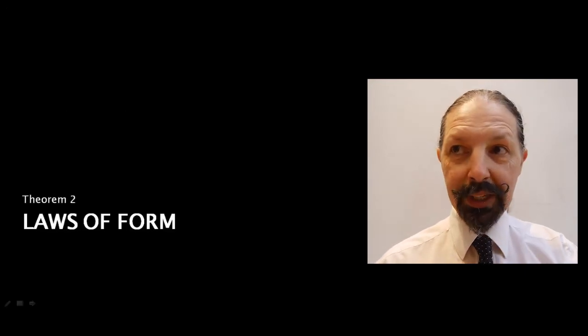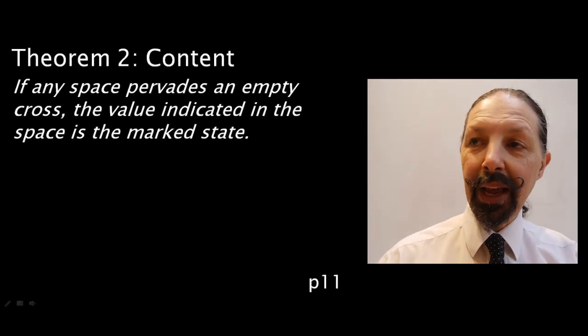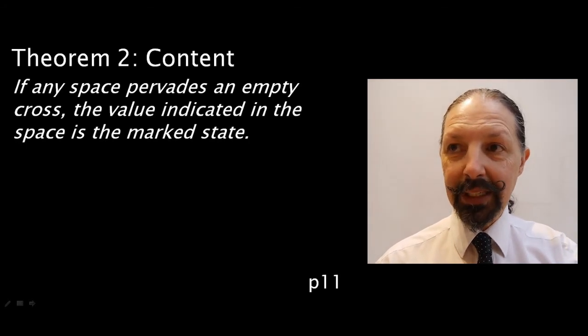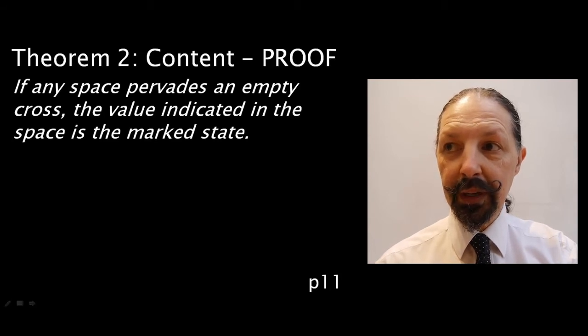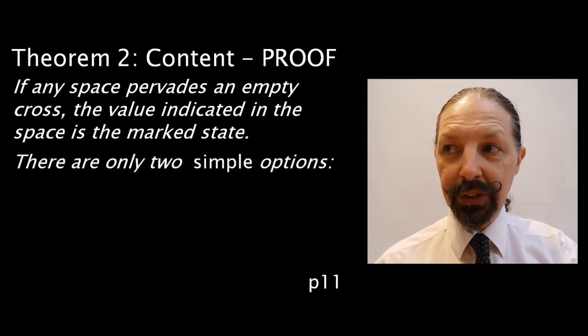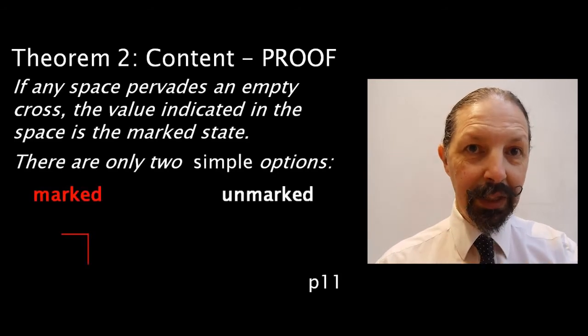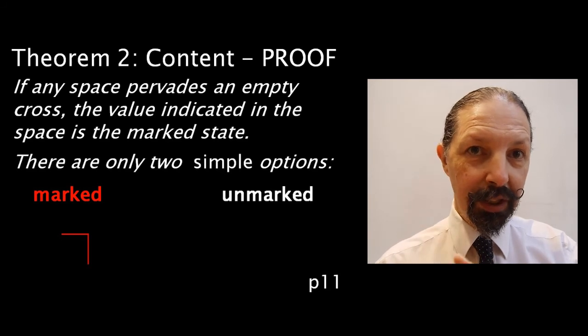Theorem 2 is all about content. And it states that if any space pervades an empty cross, the value indicated in the space is the marked state. The proof is very simple. There are only two simple options, either marked or unmarked. So, if there is an empty cross, it is, by definition, going to be marked.